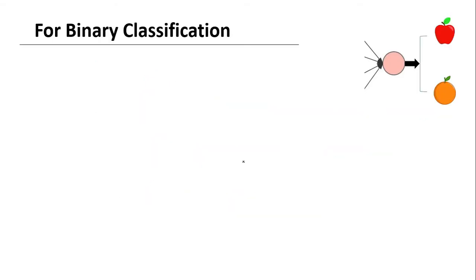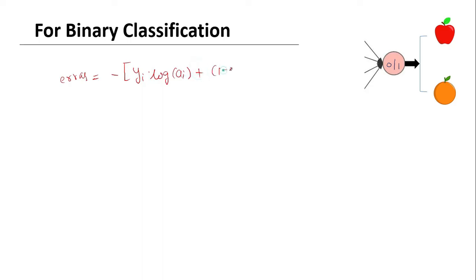Now let's look at the cost function for binary classification. We cannot use the previously seen cost function in binary classification because the output takes only 0 or 1 as its value. So we use a different type of cost function. The error for one observation is given by: minus of yi multiplied by log(ai) plus (1 minus yi) multiplied by log(1 minus ai). The cost function is again given by taking the average of all these errors.